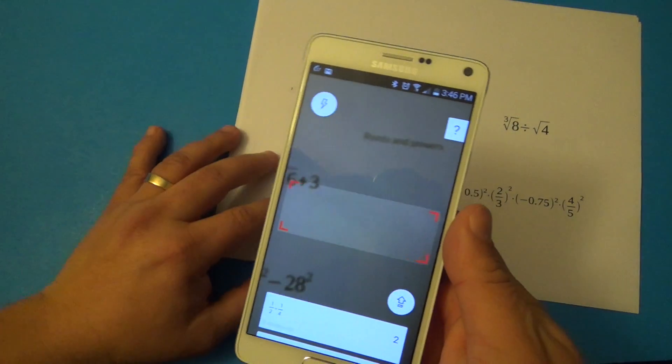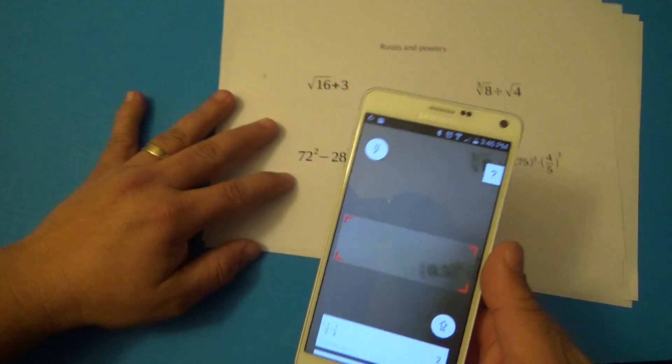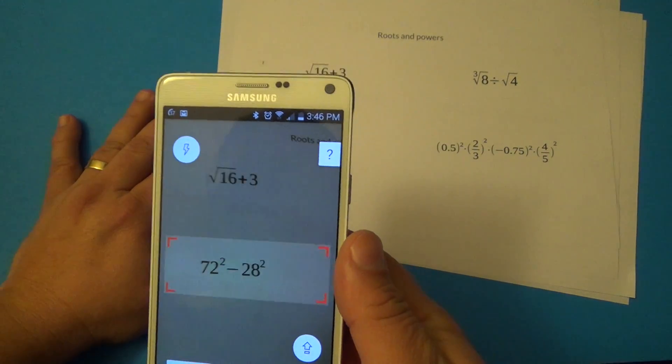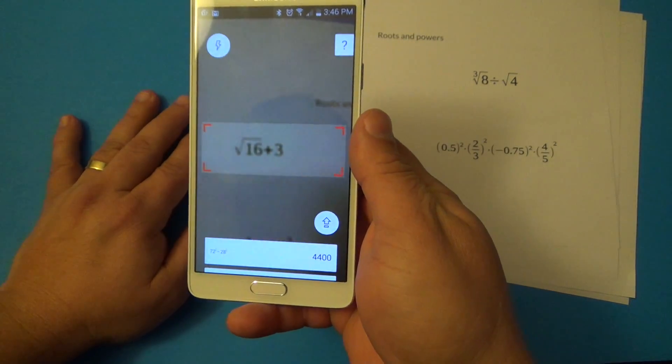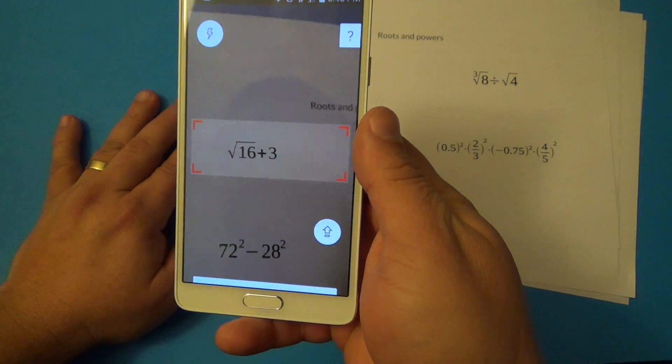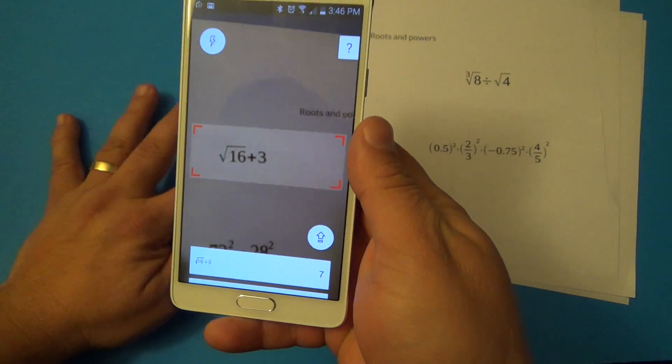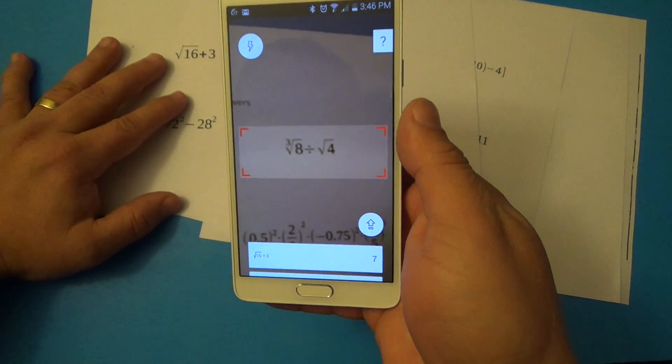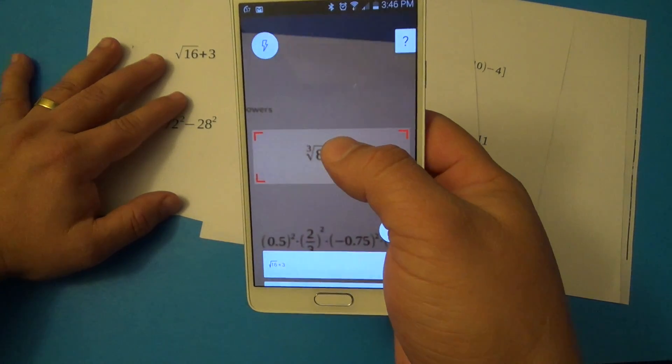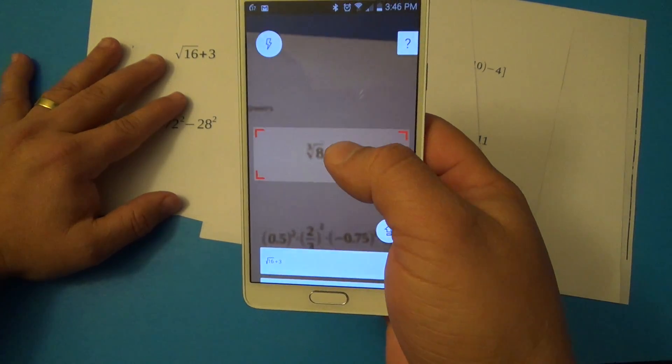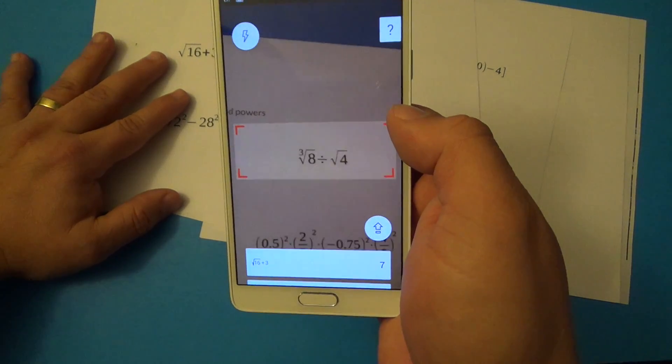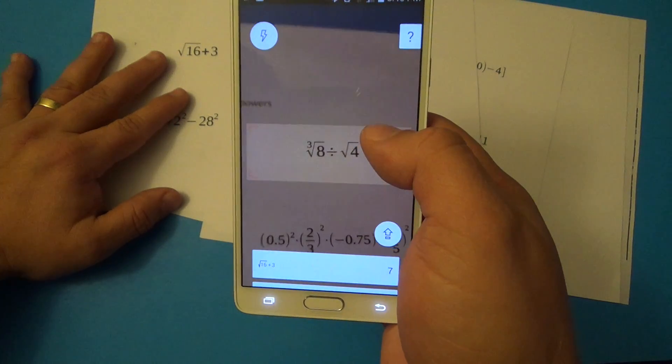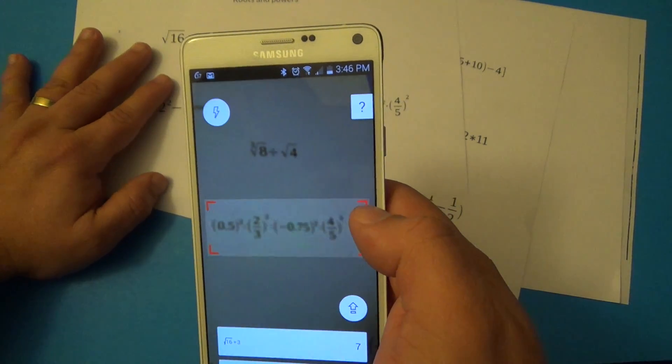This is roots and powers. Let's go ahead right there—look at that, how fast that was. This one right here, look at that. If the camera is having problems focusing, all you have to do is tap on the image, tap on the square so it can focus. Once it focuses... this one I think was solved already, maybe that's why it's not giving me... look at that.